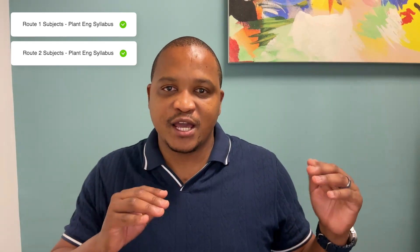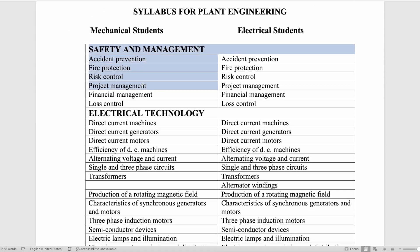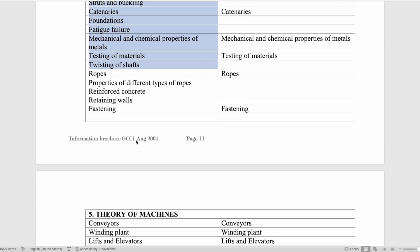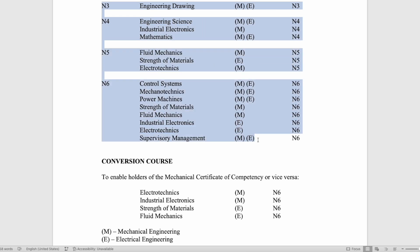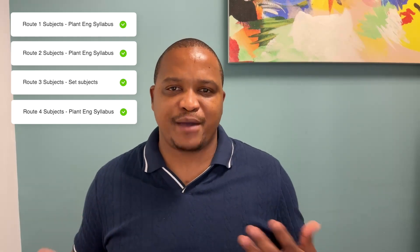When it comes to Route 2, what the Department of Labor says is that your qualification needs to have covered the plant engineering syllabus. The plant engineering syllabus the department provides is a list of different topics that your qualification or the modules you've completed will cover. For Route 3, the department has made it simple by providing a list of specific subjects that Route 3 applicants need to complete. There's also Route 4 for other qualifications, taken on a case-by-case basis.